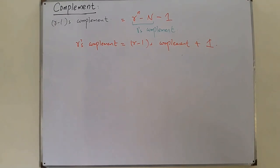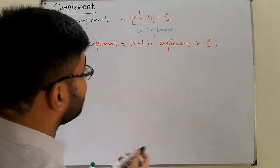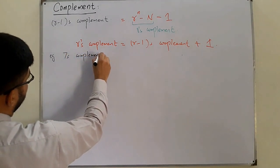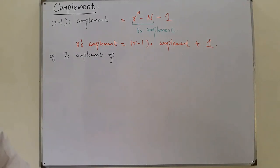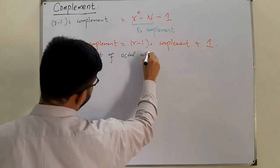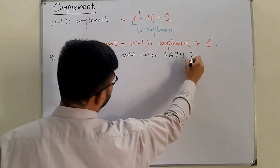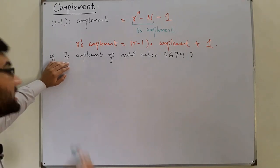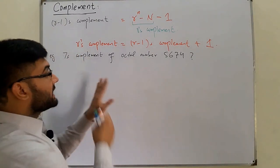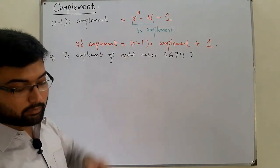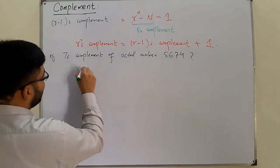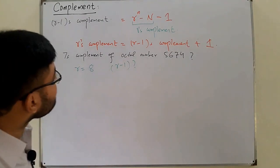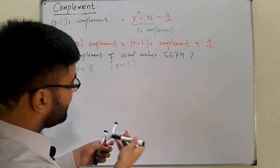Let's now do an example: find the 7's complement of the octal number 5674. Since this is an octal number, the base is 8, and we need the 7's complement, which means we need the R-minus-1's complement. So we'll use the formula directly.